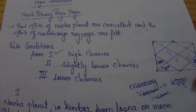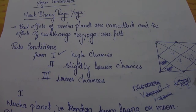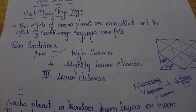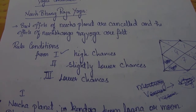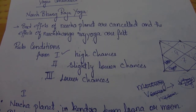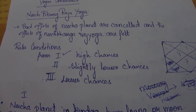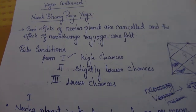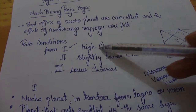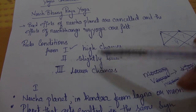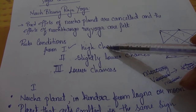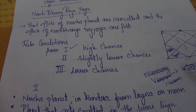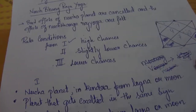For example, let us take Venus. Venus is debilitated in the sign of Virgo — it loses its power in Virgo, but it can still give good results if the following conditions are met. We'll be doing condition number 1, 2 and 3. The highest priority will be for condition 1, then 2 and then 3.